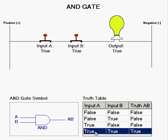But when both A and B are true, then the output is true. This is the only time that the output is true with the AND gate.